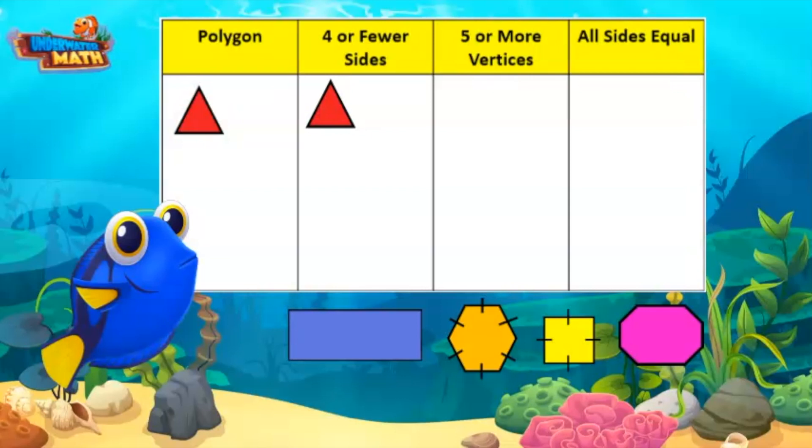The rectangle is a polygon and has four or fewer sides. It doesn't fit in the other categories. The hexagon is a polygon and has more than four sides, so it does not fit in this category. It does fit in five or more vertices. The lines on the sides tell me they are all equal, so it fits in this category.